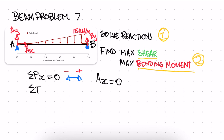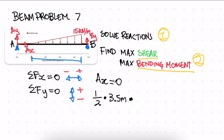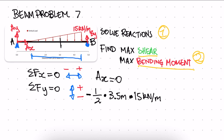Next, sum of forces in y equals zero. Forces acting up are positive, acting down are negative. The total force from the triangle is the area: half the base times the height. The triangle spans from the one meter point to the 4.5 meter point, so the base is 3.5 meters, multiplied by the height of 15 kilonewtons per meter. This force is acting down, so it's negative. Then we have our two reactions Ay and By, both acting up, so plus Ay plus By equals zero.